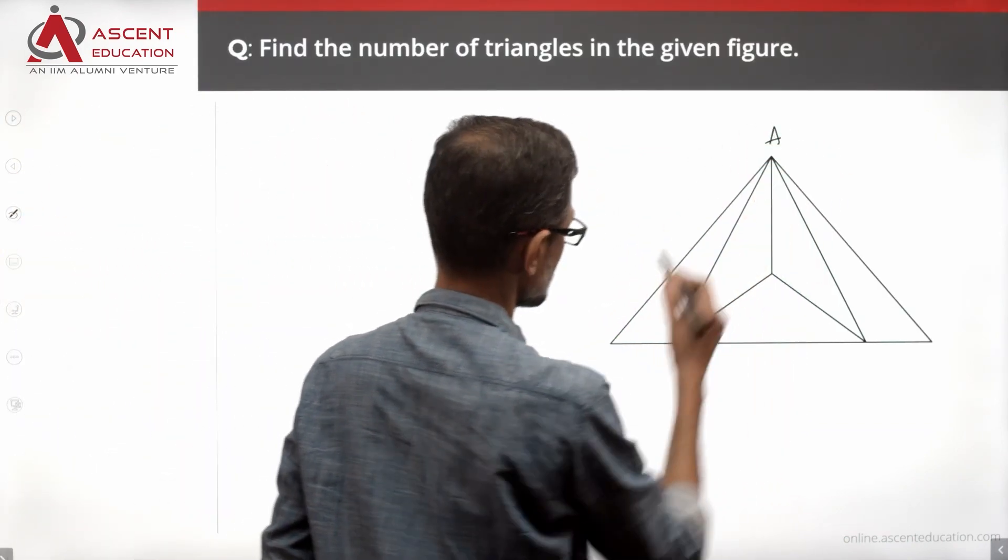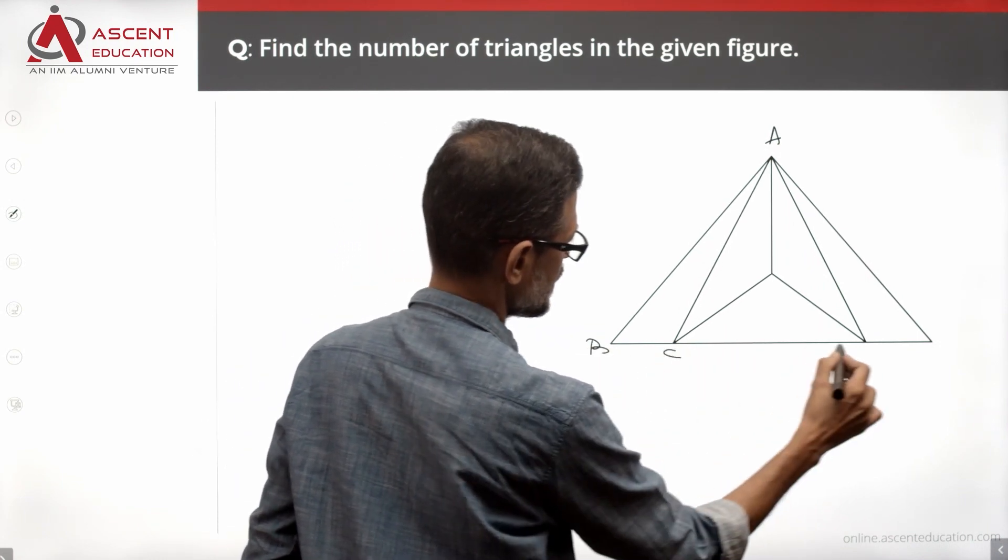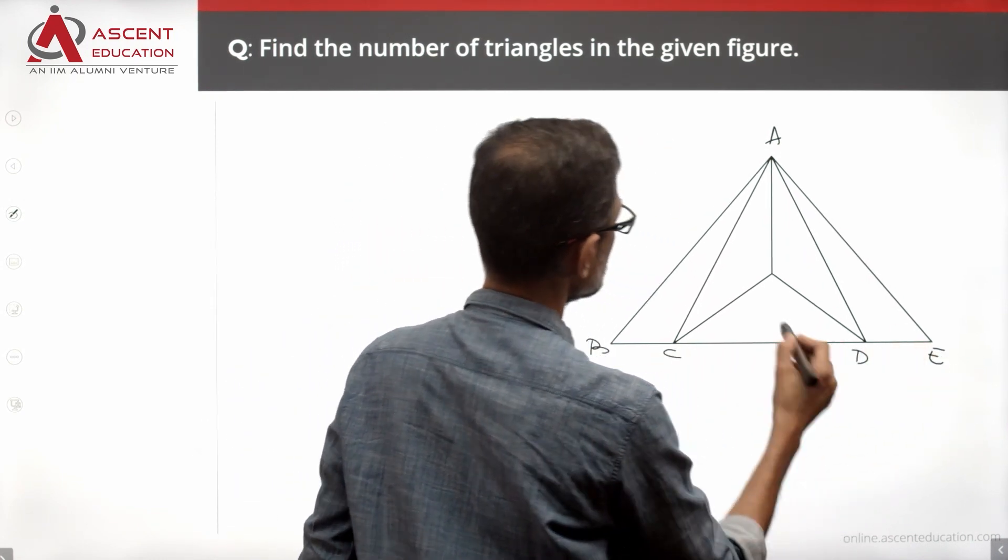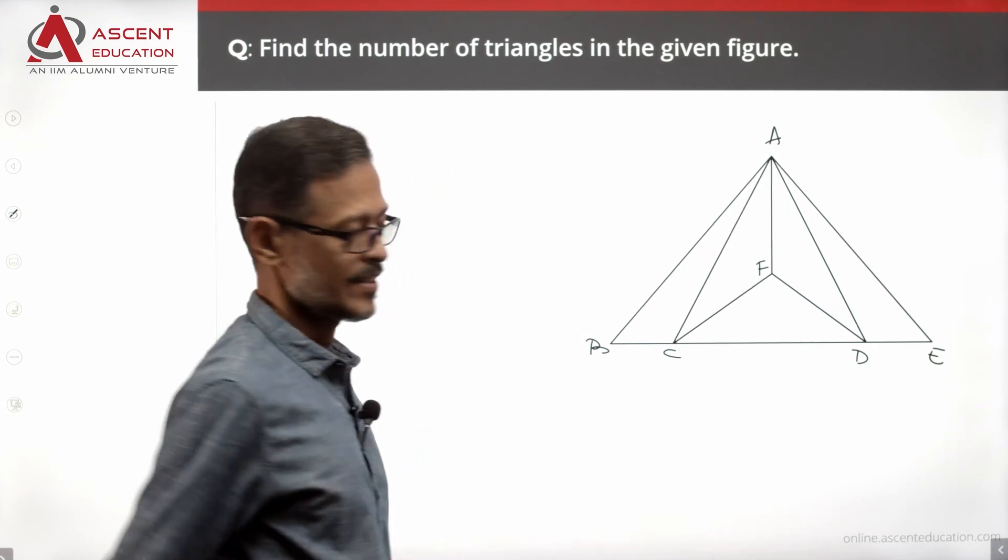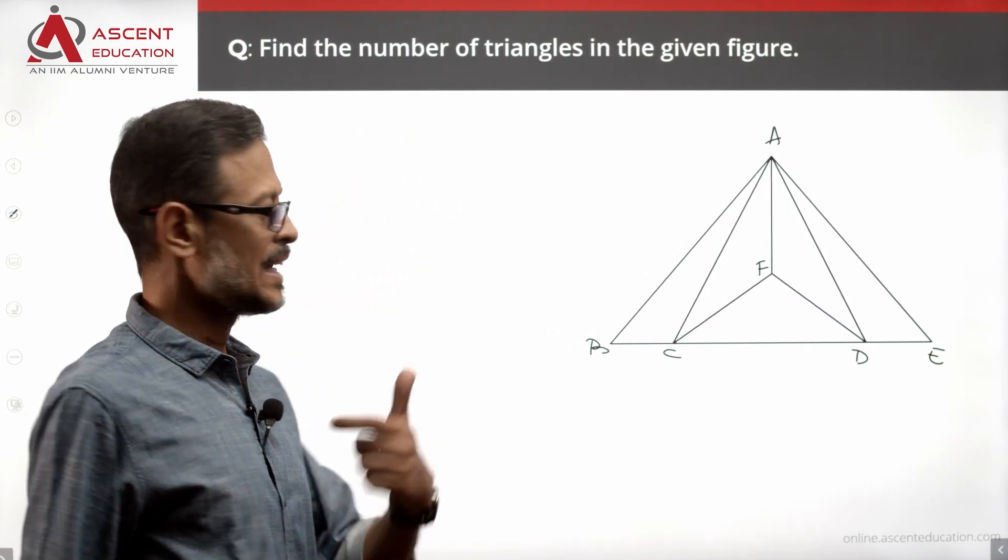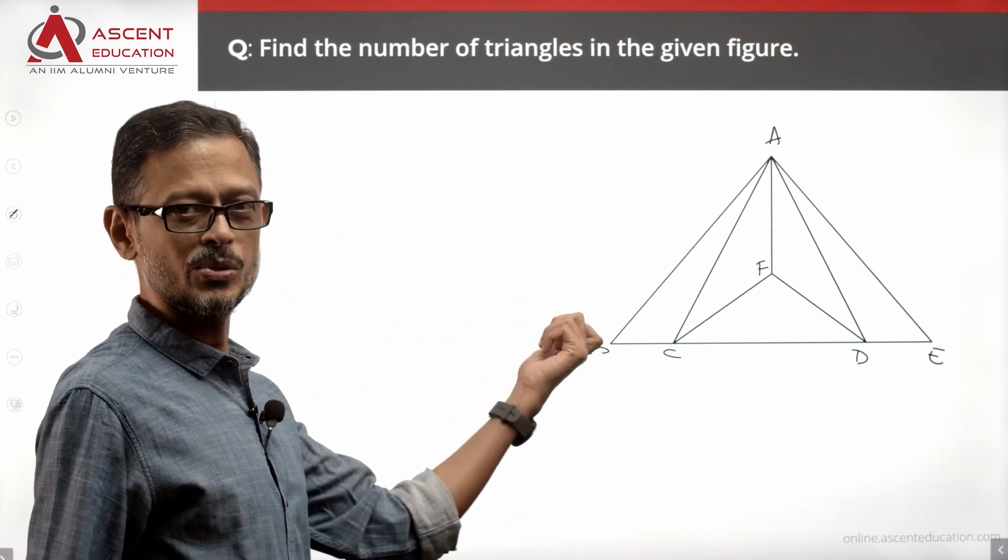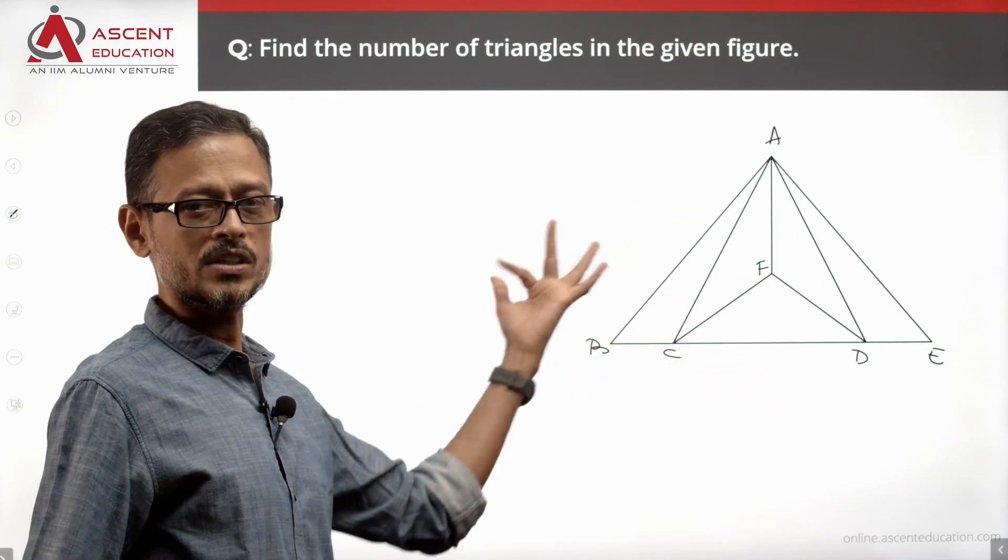Name these vertices: A, B, C, D, E, F. These are the vertices. Now, I will mark the triangles, or I can also do it by actually saying what those vertices are.